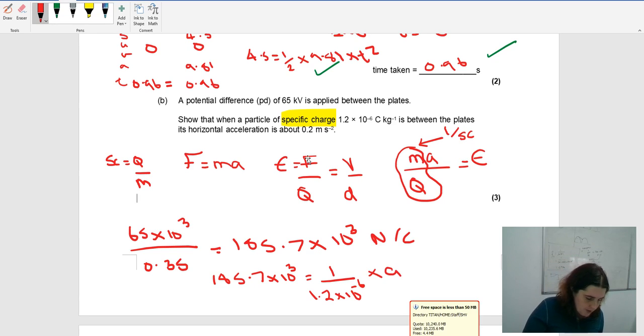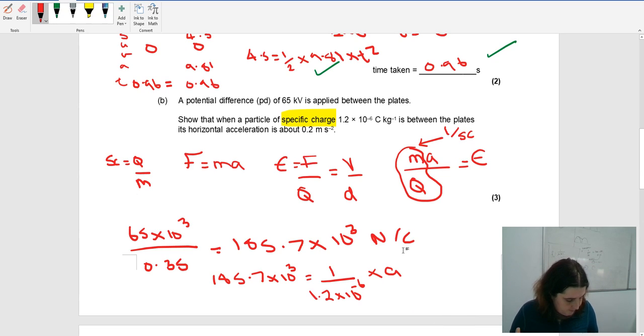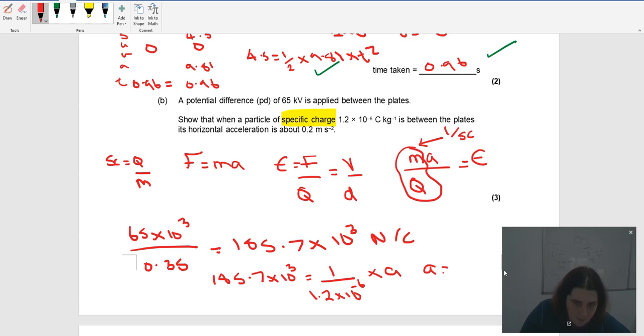I'm going to multiply by 1.2 times 10 to the minus 6. I get an answer of A equaling 0.22 meters per second squared.